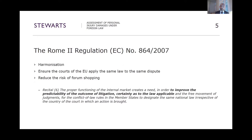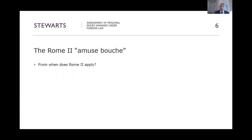The aim of the Rome 2 Regulation was harmonization — to ensure that courts across the EU were applying the same law to the same disputes, and therefore to reduce the risk of forum shopping. This is set out at Recital 6 of the Regulation, which aimed at improving the predictability of the outcome of litigation and certainty as to the applicable law. So the first installment under the Rome 2 Regulation for litigators in cross-border cases in England, but also throughout the EU, was: when does Rome 2 apply?